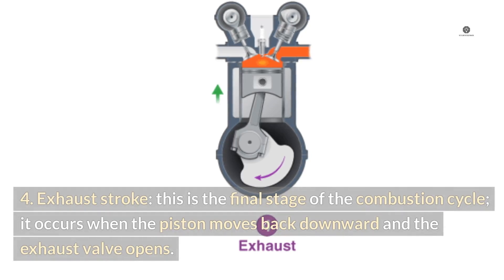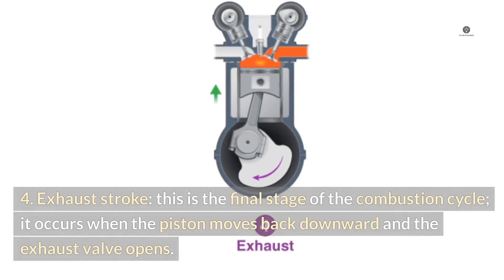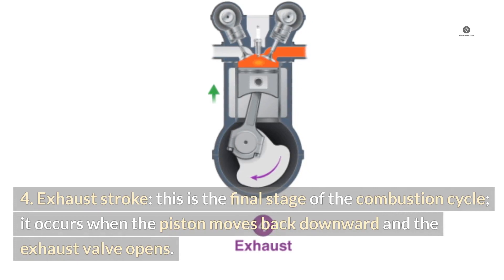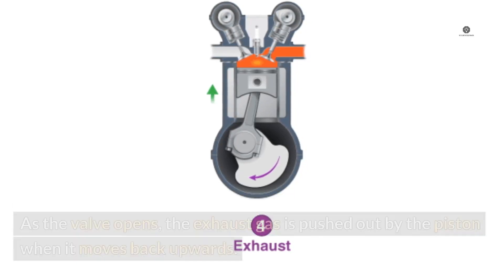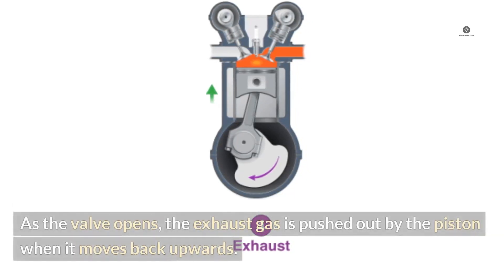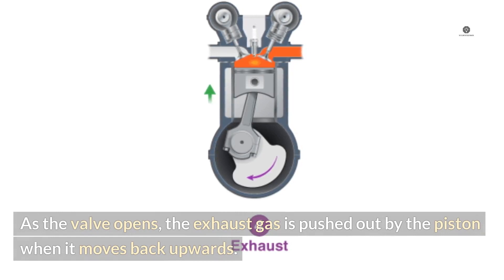Four: exhaust stroke. This is the final stage of the combustion cycle. It occurs when the piston moves back downward and the exhaust valve opens. As the valve opens, the exhaust gas is pushed out by the piston when it moves back upwards.